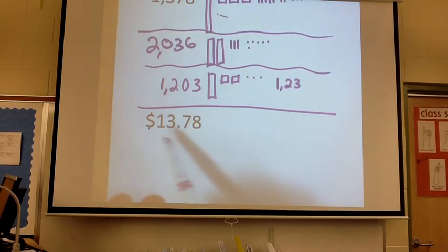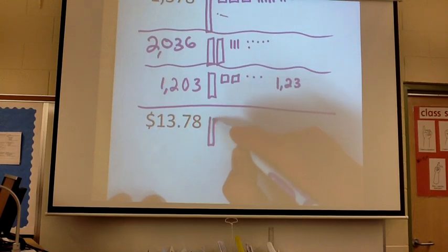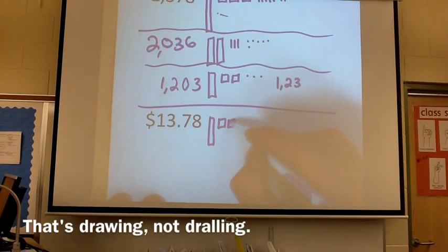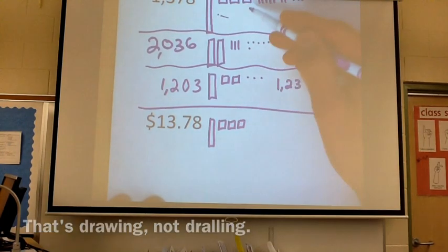Of course, when it's written like this, we say $13.78. But the place value drawing looks just the same as it does on top.